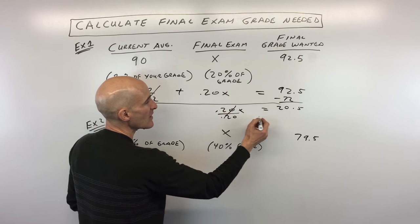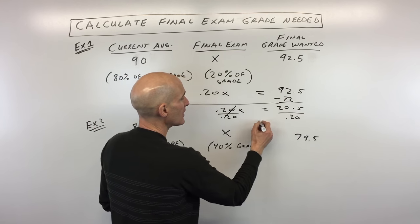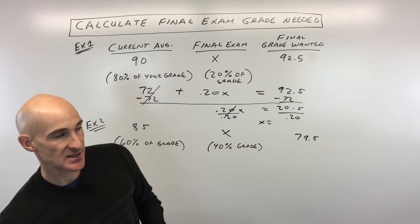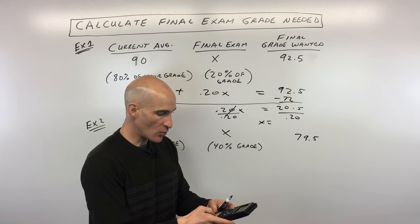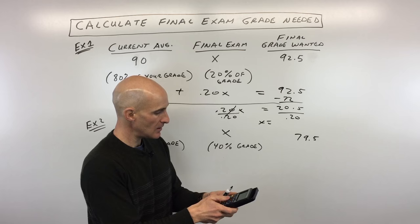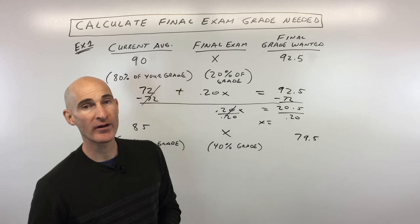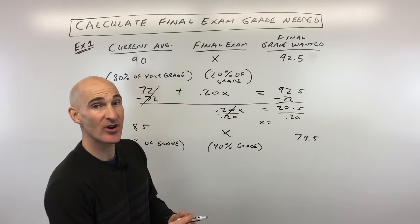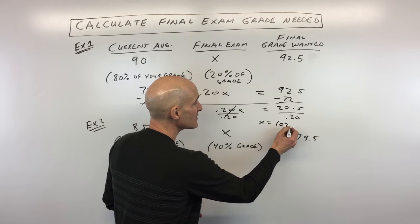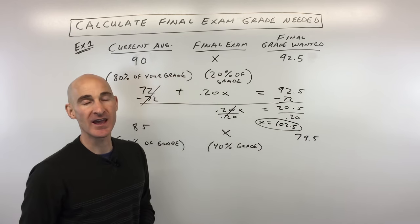And we're going to divide both sides by 0.20. So I'm going to go to the calculator now. We've got 20.5 divided by 0.20, which equals 102.5. So that means you need to get the extra credit if you're going to get this desired grade that you want on your final exam.